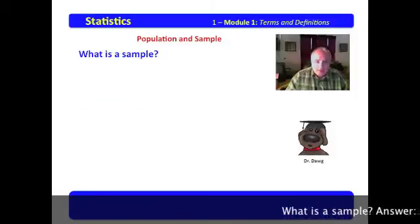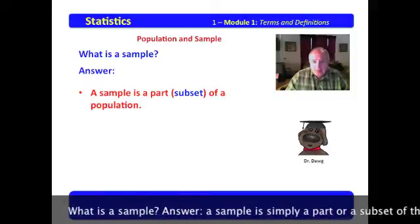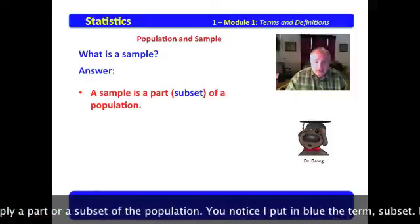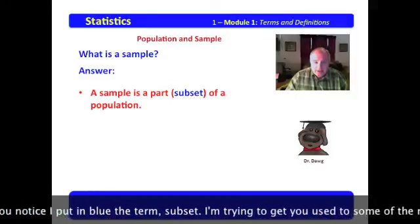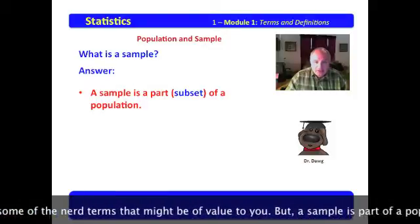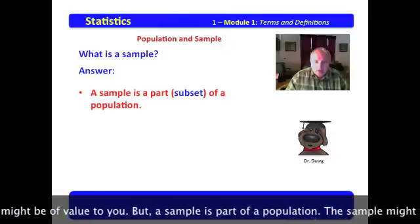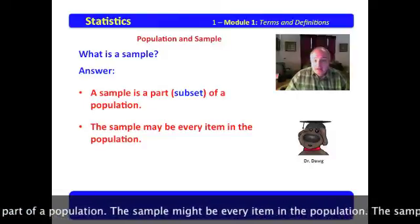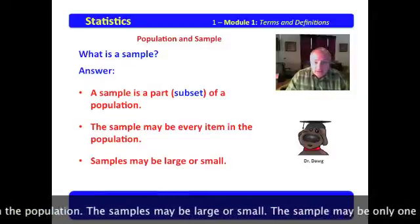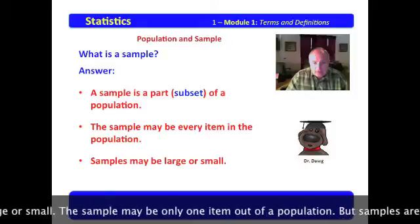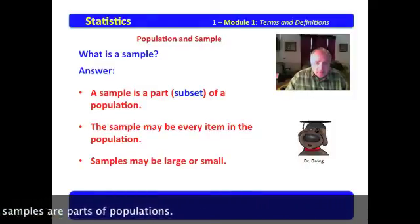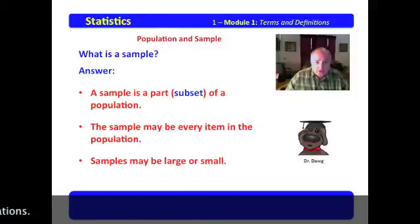What is a sample? A sample is simply a part or a subset of a population. You notice I put in blue the term subset. I'm trying to get you used to some of the nerd terms that might be of value to you. But a sample is part of a population. The sample may be every item in the sample or in the population. The samples may be large or small. The sample may be only one item out of a population. But samples are parts of populations.